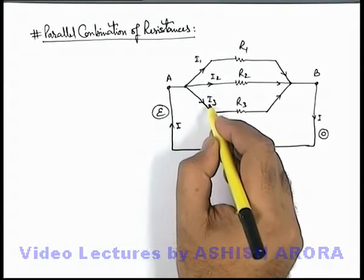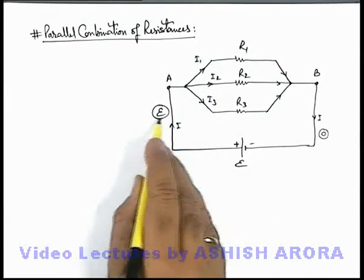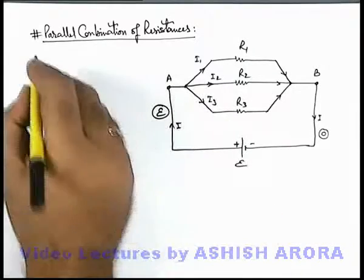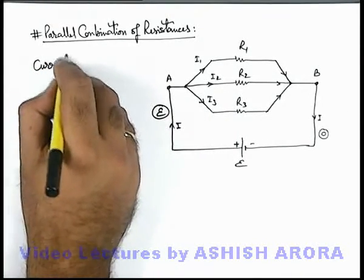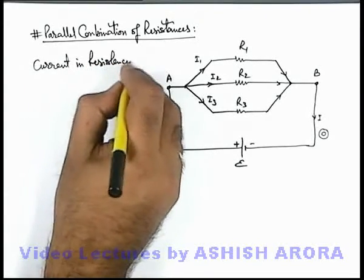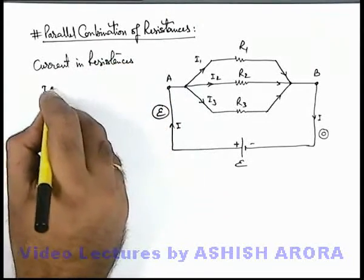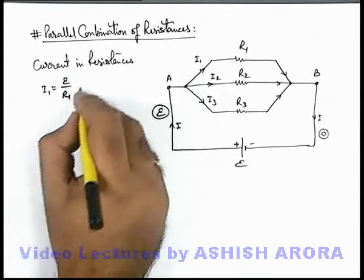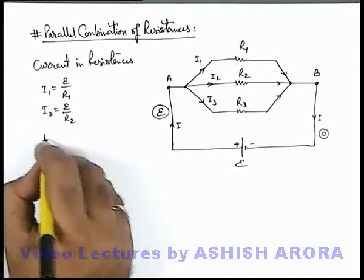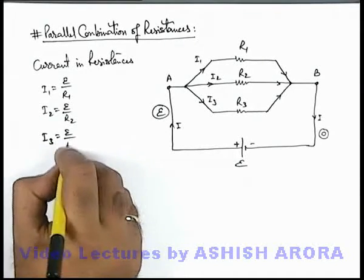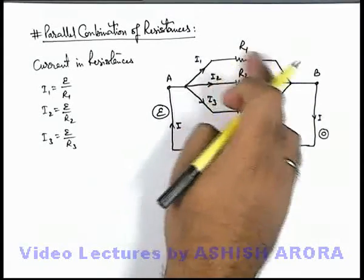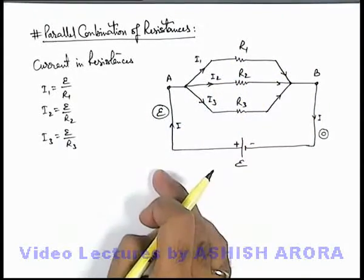The values of i1, i2, and i3 depend on the potential difference, which is the EMF of the battery. So the current in each resistance can be directly given as: i1 is equal to e by R1, i2 is equal to e by R2, and i3 is equal to e by R3, because e is the potential difference and R is the resistance. By Ohm's law we can calculate the current through individual resistances.